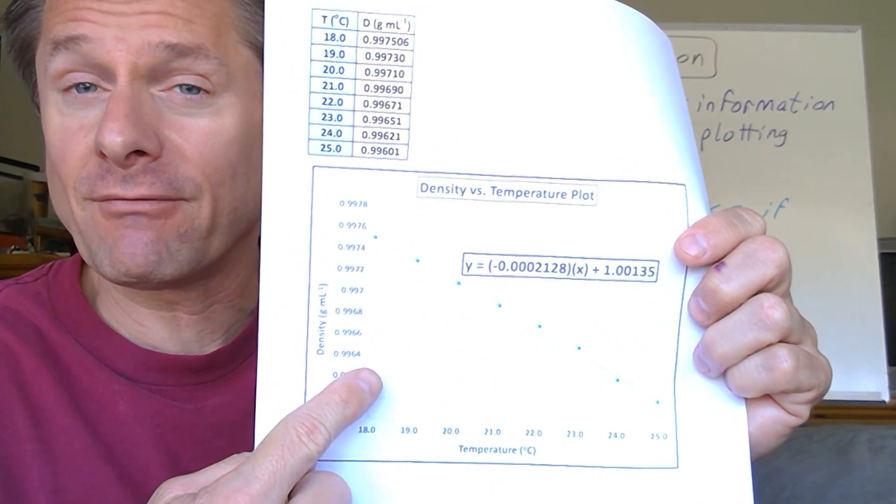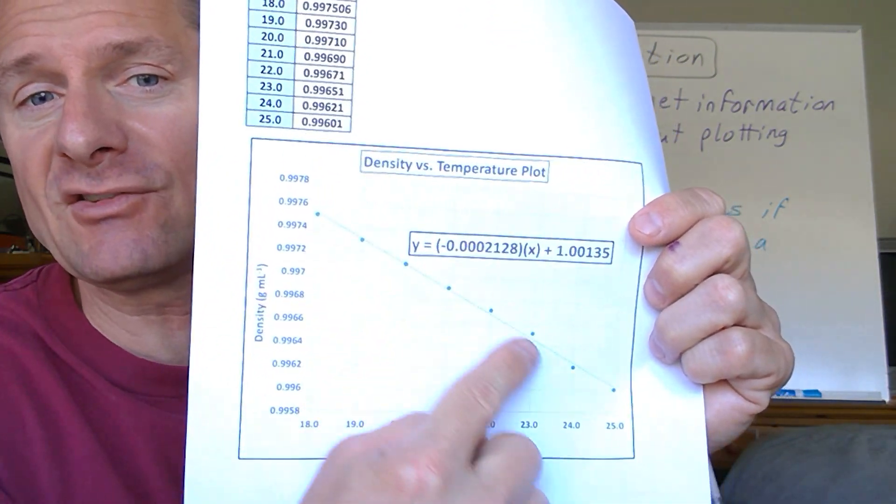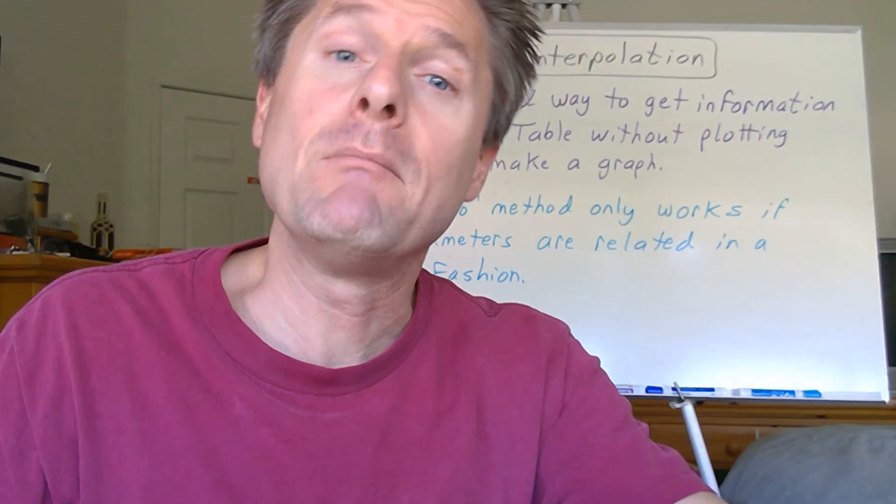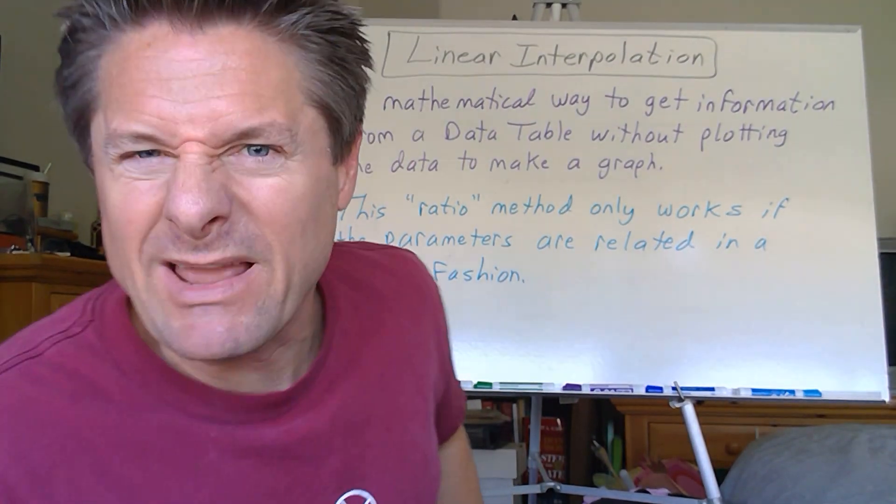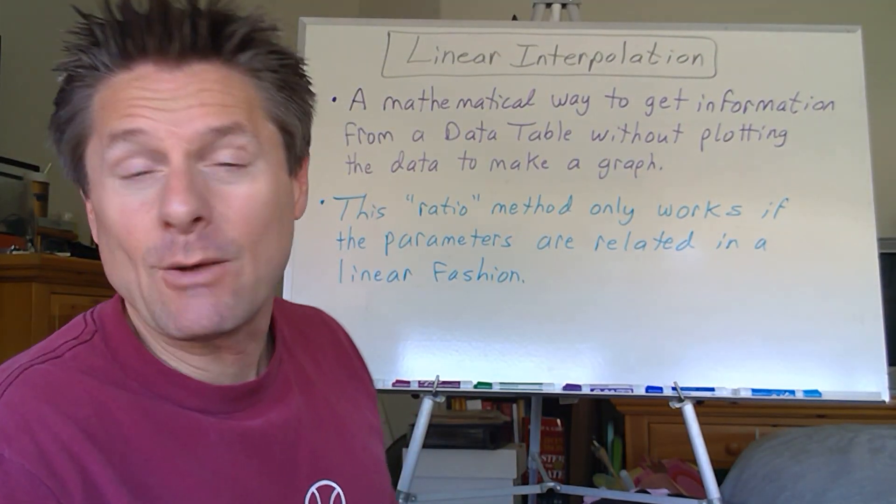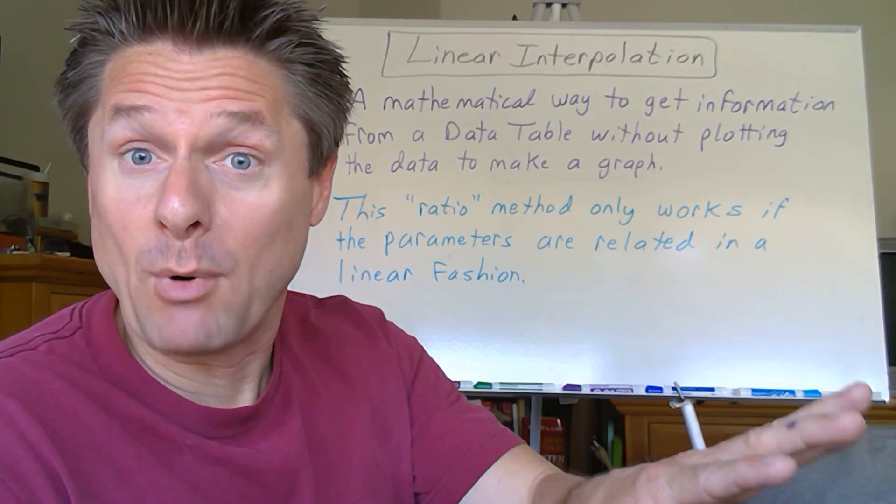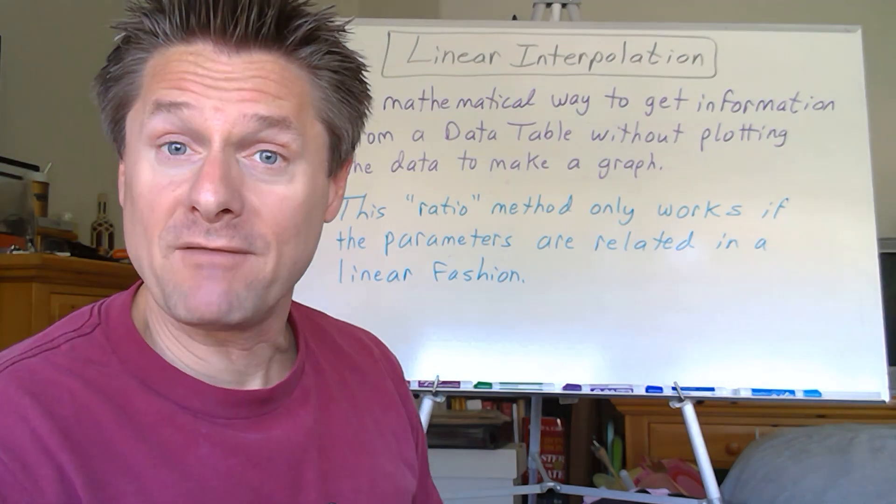One, make a graph, right? Do a plot of data and do a least squares fit, add a trend line and get your y equals mx plus b. We showed that in the making graphs video. That's the best way to do it, but that can take a while if you're not adept at plotting data. But if you practice it enough, you can whip that out pretty fast.